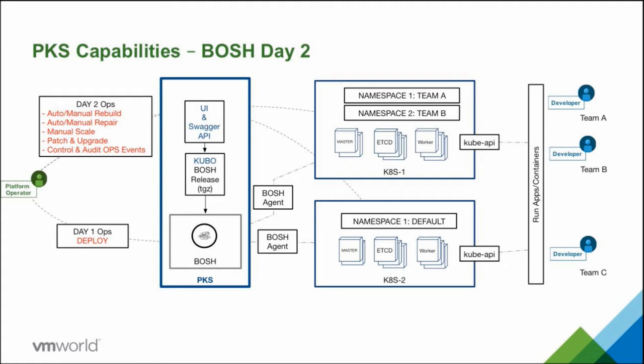One of the unique things BOSH does for day two is BOSH agents. When those VMs get deployed to perform our Kubernetes jobs, they're also running a BOSH agent communicating back their health — 'I'm a worker node in a Kubernetes cluster, I'm healthy' or 'I'm a master node, I'm unhealthy.' BOSH is actually tracking this for day two, taking a look at the state of all these VMs and maintaining that state. So it's not only a day-one deployment tool, but a day-two operational tool.